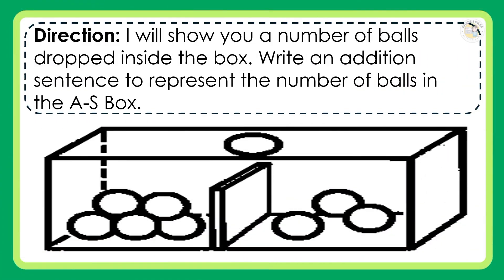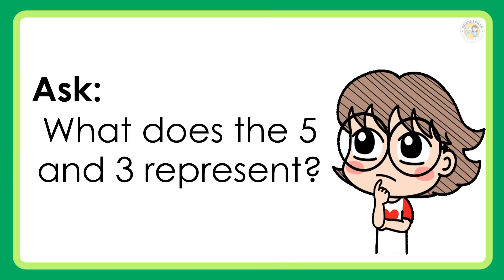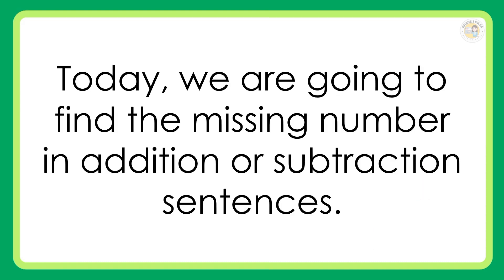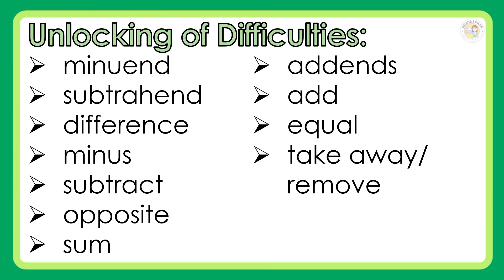Direction: I will show you a number of balls dropped inside the box. Write an addition sentence to represent the number of balls in the box. What does the 5 and 3 represent? What does 8 tell us? Today, we are going to find the missing number in addition or subtraction sentences. Unlocking of difficulties: minuend, subtrahend, difference, minus, subtract, opposite, sum, addends, add, equal, take away or remove.